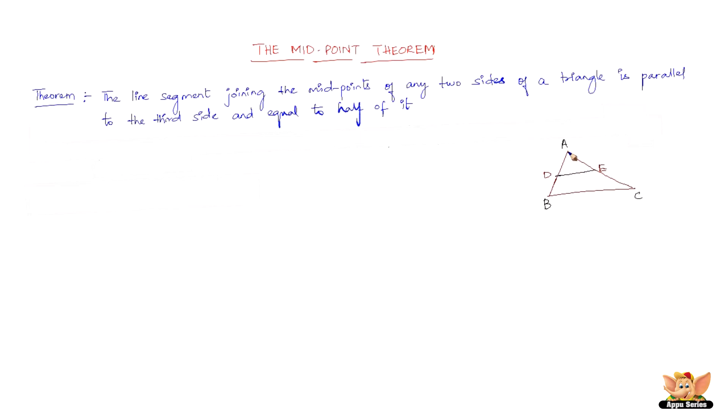Now we've got a triangle ABC. The line segment joining the midpoints of any two sides of a triangle - AB and AC are the two sides of the triangle. The point D and point E are the midpoints of those two sides. The line segment DE joins them.